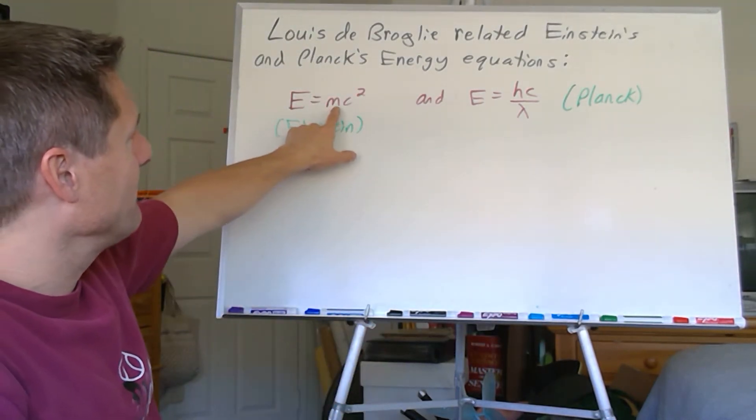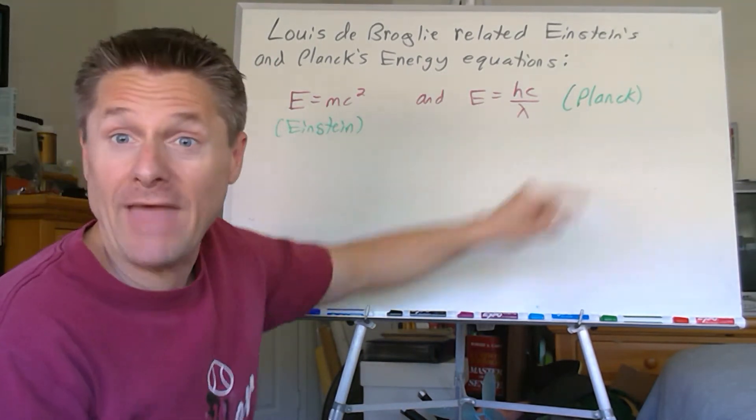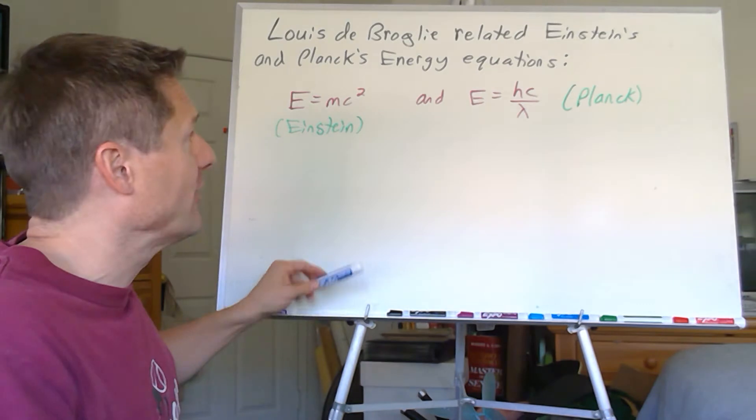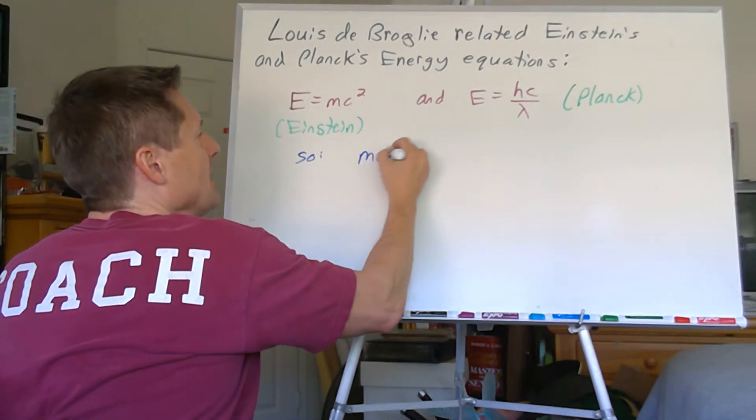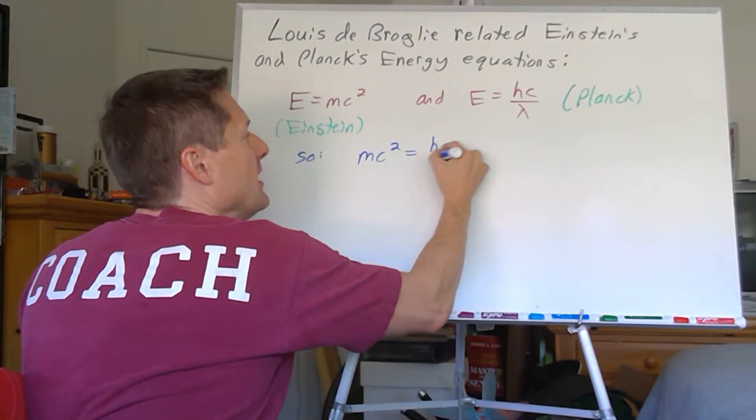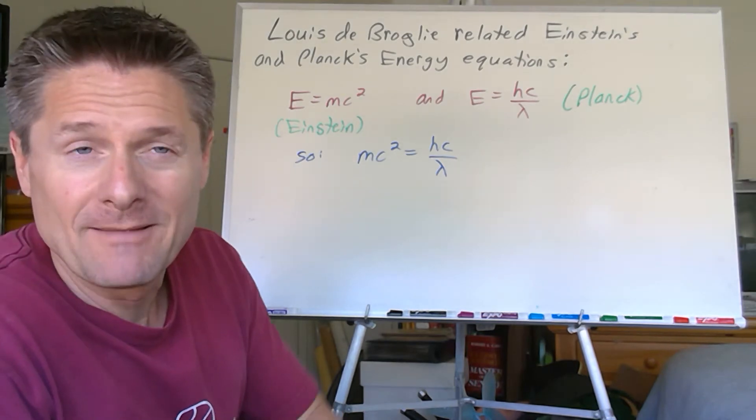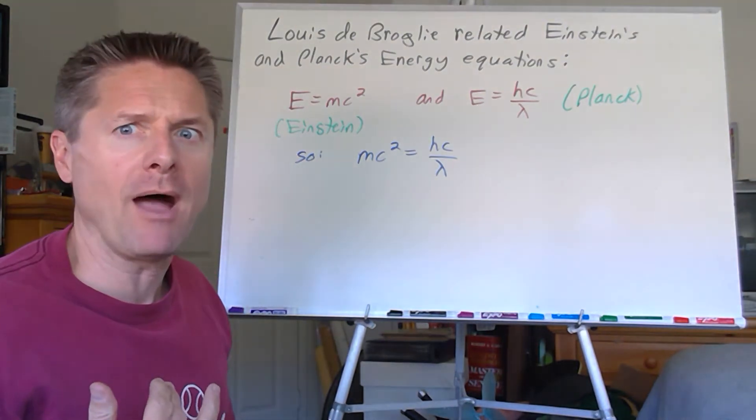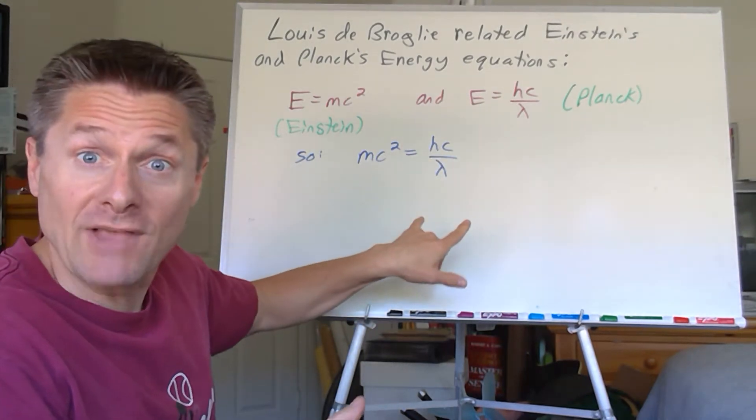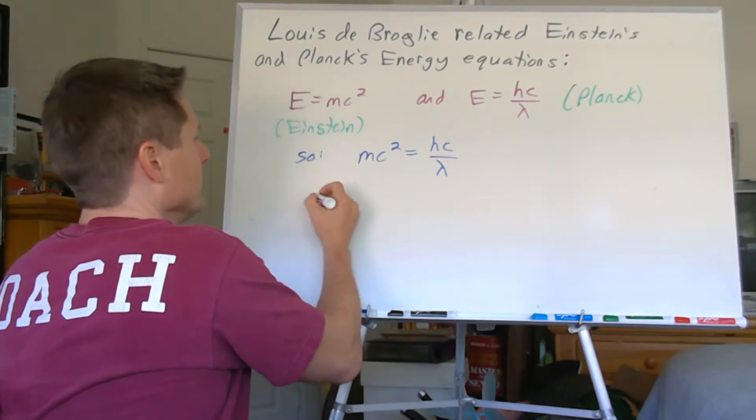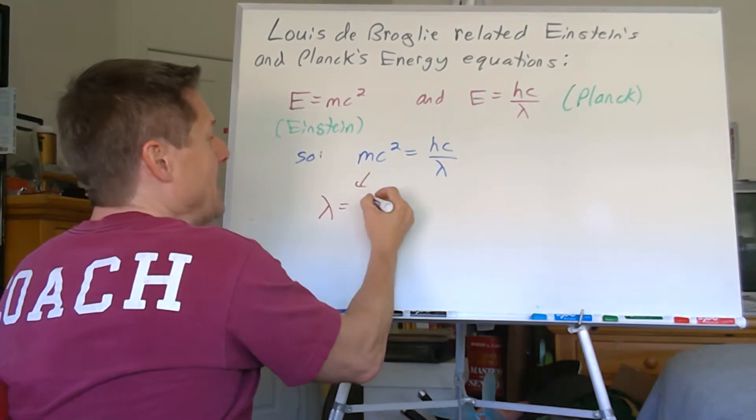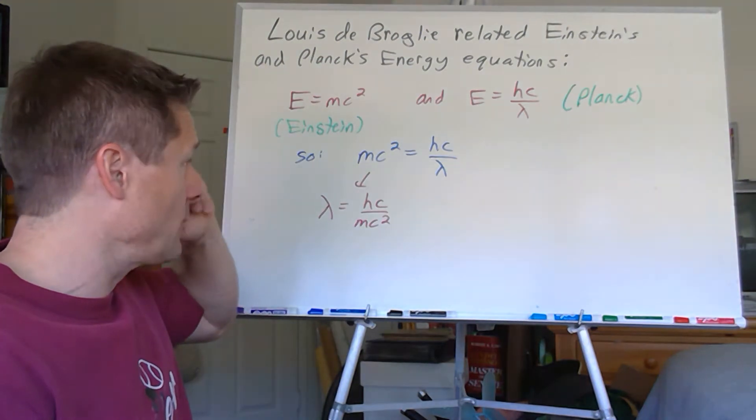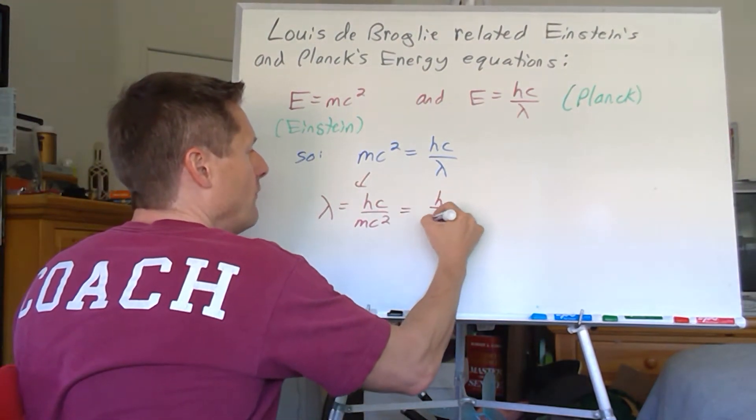So we know E equals mc squared from Einstein, and we know E equals hc over lambda from Planck, or h nu. Would you agree that if this equals E and that equals E, then that must equal that? If A equals B and B equals C, then A must equal C. So mc squared equals hc over lambda. What we're after is the wavelength. If a particle has wave-like behavior, what's the wavelength of the particle? It's weird to think about. Notice there are c's on both sides, that's going to cancel. Let's isolate the wavelength.